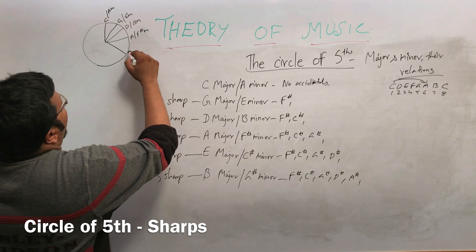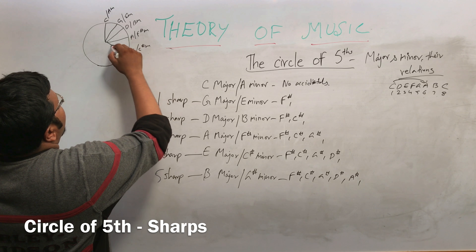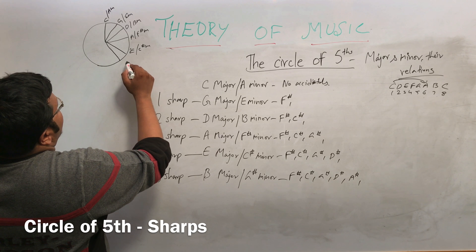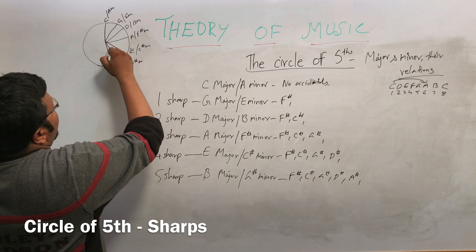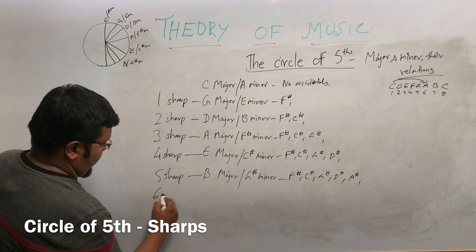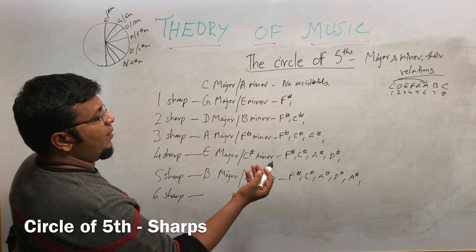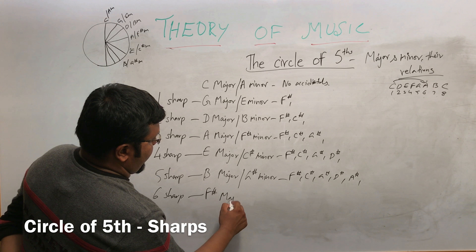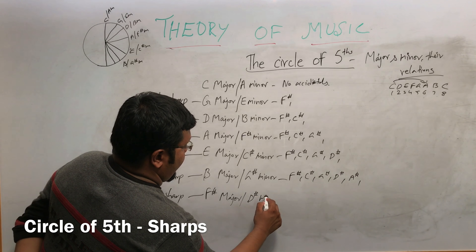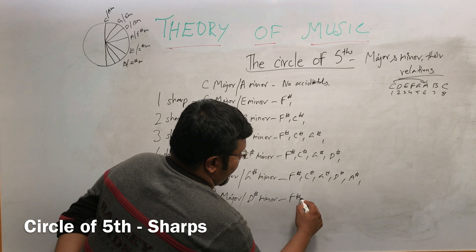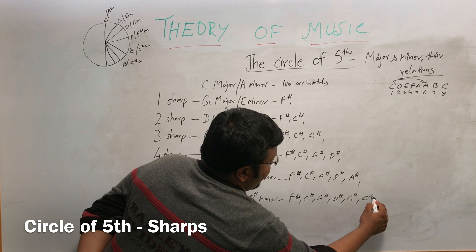B major relates to C-sharp minor. The next one is the F-sharp scale, which is B major with G-sharp minor. The six-sharp scale includes B, C-sharp, D-sharp, E, F-sharp — that is F-sharp major, and the relative minor is D-sharp minor. The sharps are F-sharp, C-sharp, D-sharp, A-sharp, and E-sharp.